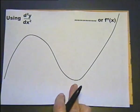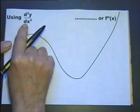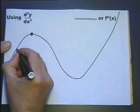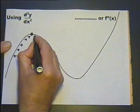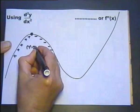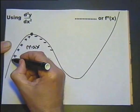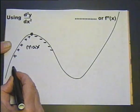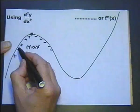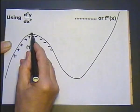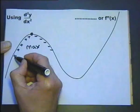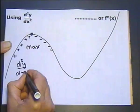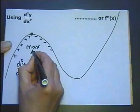Now let's look at how to use the second differential, d²y/dx², or f''(x). At a maximum stationary point, the gradient before is positive and after is negative. As x increases, the gradient is decreasing — it's still decreasing because going from positive to negative is a decrease. So d²y/dx² is less than zero, which indicates a maximum point.